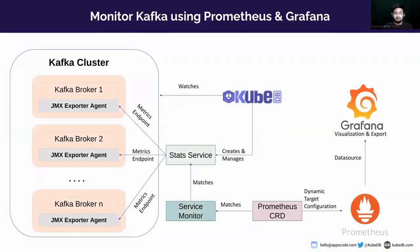One of the major features in this release is adding monitoring support for Kafka using Prometheus and Grafana dashboards. If you have a Kafka cluster running that is KUBEDB-managed on your cloud Kubernetes cluster, you will find that inside each broker container, a JMX exporter agent will be running, exposing all of the required Kafka metrics to a JMX port or metrics endpoint.